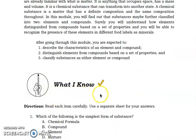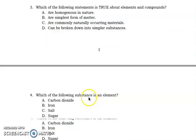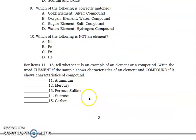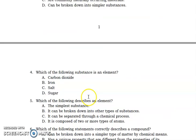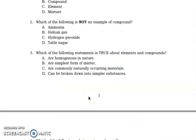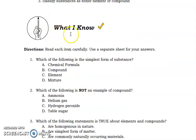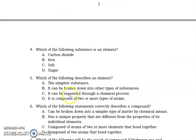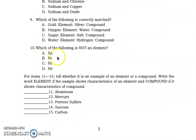For the what I know part, this is the first activity that you're going to do for today. You're going to answer the 15 questions on your module. Kindly get your one-hole sheet of paper. Write down your name, your grade and section, the subject, the module number, and the date today. Write down what I know and the number from 1 to 15. For numbers 1 to 10, you're going to write down the letter of your answer. And then for 11 to 15, you will just write down the word element if the given example shows characteristic of an element. And you're going to write the word compound if it shows characteristics of a compound.